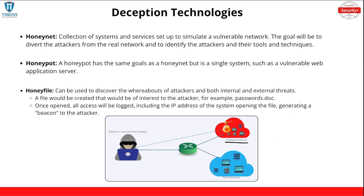A honey pot delivers the same goals as a honey net, but it's a single system — for example, a single VM posing as a web server that's completely vulnerable. It does the same thing as a honey net. Then we have a honey file, which in the old Security+ exam was known as a decoy file — you may see that term in your SOC or cybersecurity career.